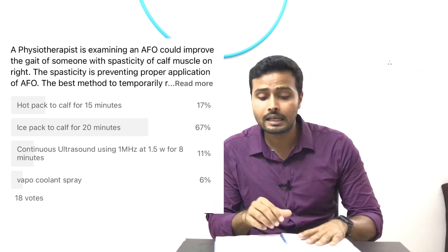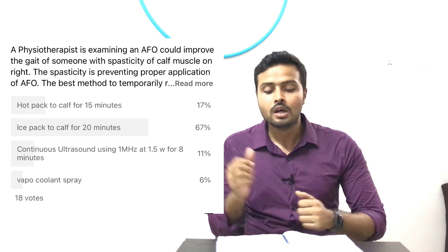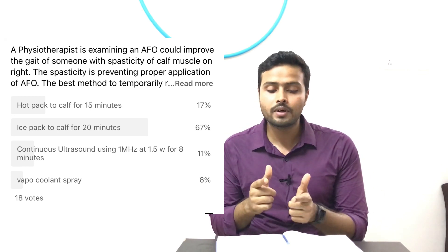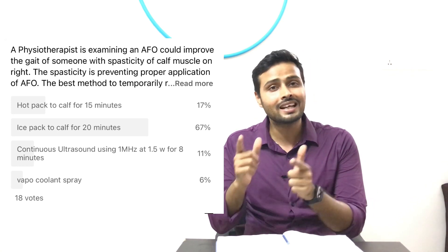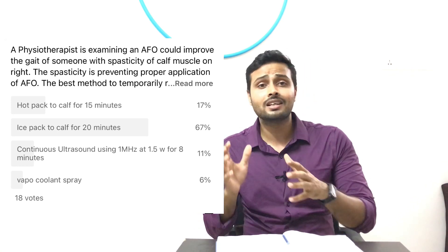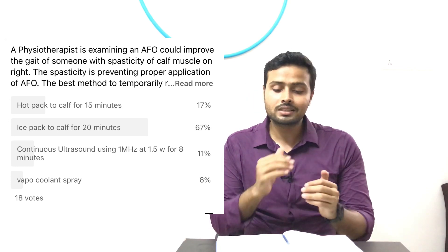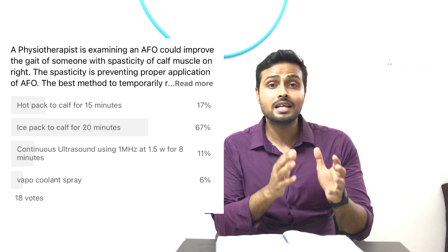Moving forward to question number 25, asked this week on Saturday: a physiotherapist is examining an AFO which could improve the gait of someone with spasticity of the gastrocnemius and soleus complex on the right side — basically calf muscle spasticity on the right side. The spasticity is preventing proper application of the AFO.